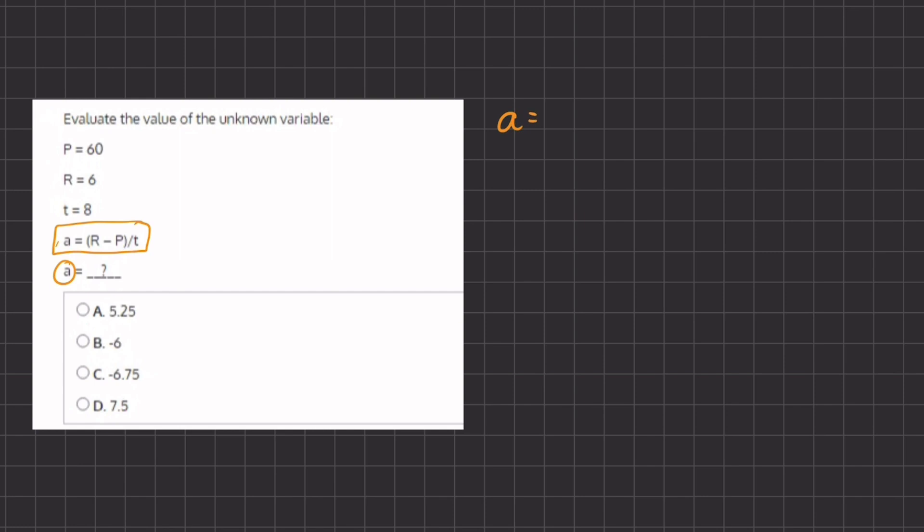So a equals r, which is 6, minus p, which is 60, and all this is divided by t, which is 8.